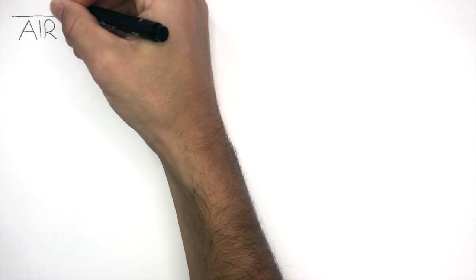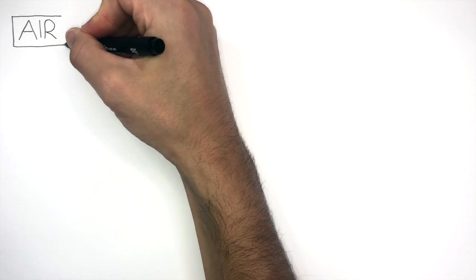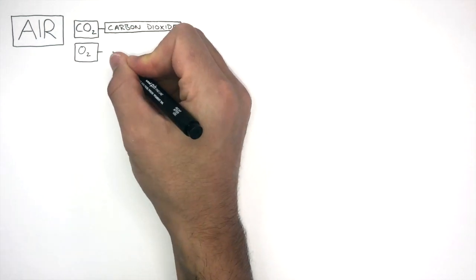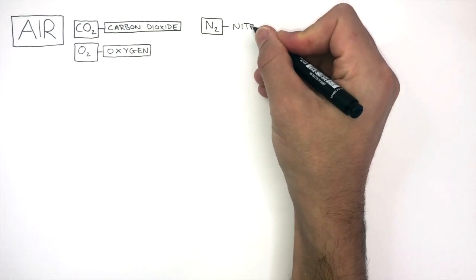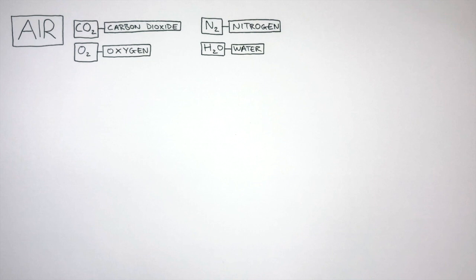Air is a mixture of different gases, such as carbon dioxide, oxygen, nitrogen, and water vapor. These are all molecules as they are non-metal atoms covalently bonded to each other.